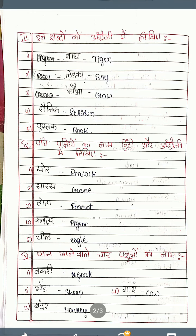Fifth question: Ghaas khaane waale chaar pashuon ka naam — names of four grass-eating animals. Bakari means goat — G-O-A-T. Bhed means sheep — S-H-E-E-P. Bandar means monkey — M-O-N-K-E-Y. Gay means cow — C-O-W.